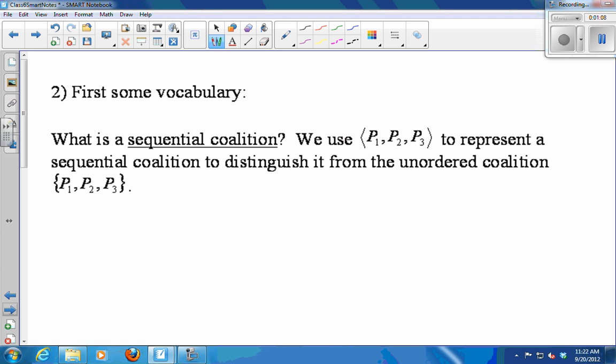A sequential coalition is a coalition whose order matters. So this coalition, P1, P2, P3, and instead of using curly brackets, I'm using the little arrow brackets. This coalition started with P1. P1 stood up in the middle of the room and said, I want to form a coalition. Who's with me? P2 joined next. P2 said, I'm with you. And then P3 joined. So the coalition started with P1, then P2, then P3 came on board. So the order of joining matters in a sequential coalition.